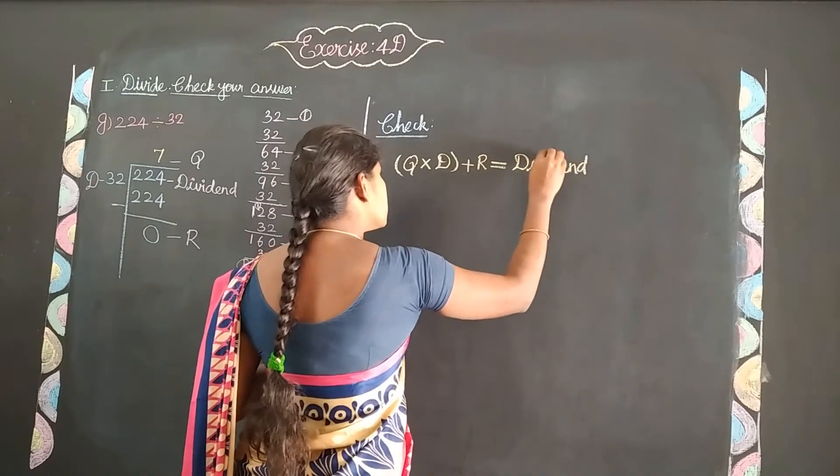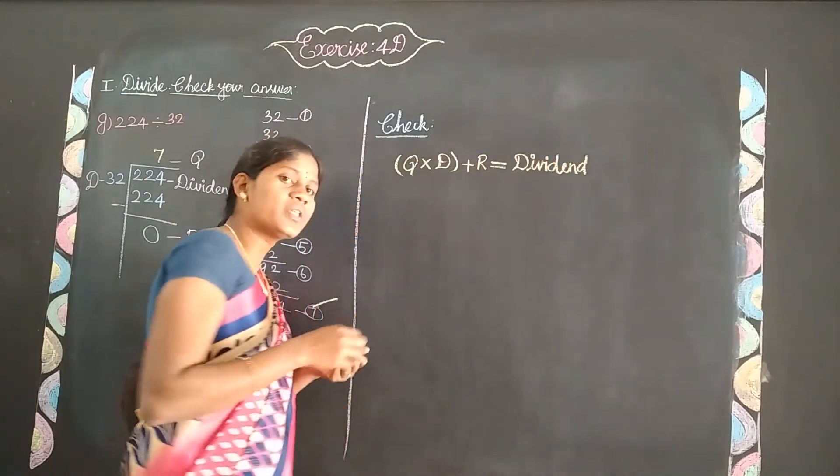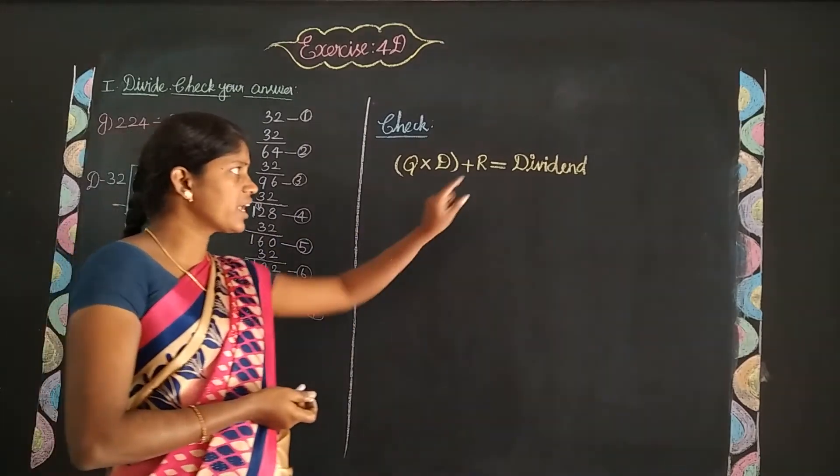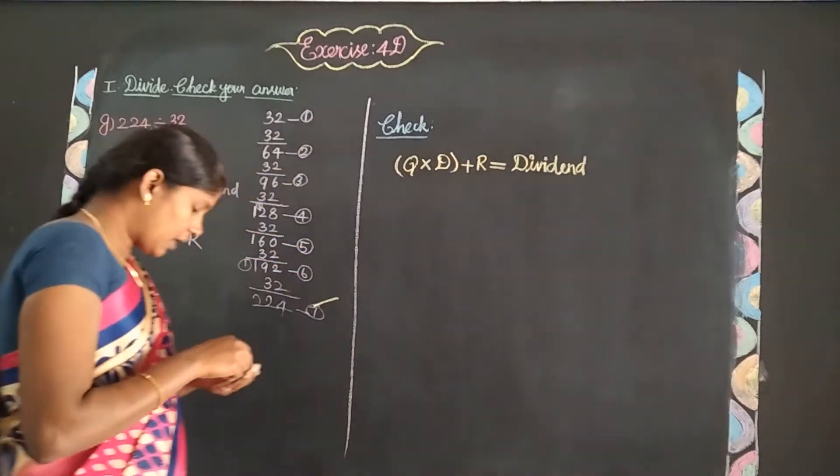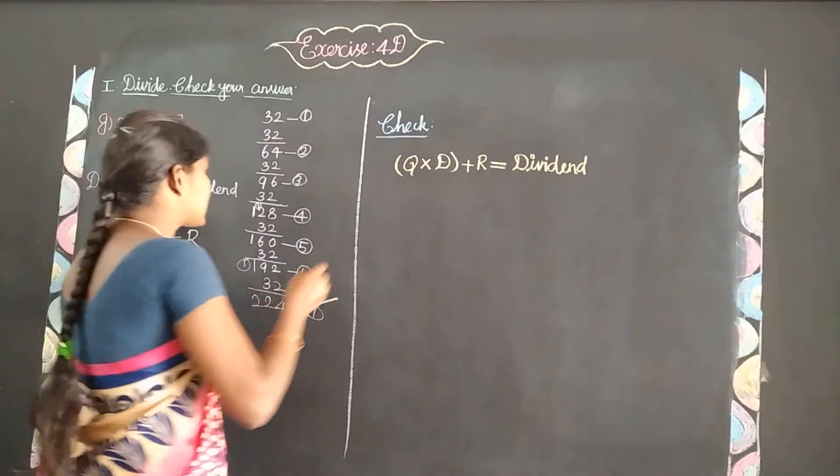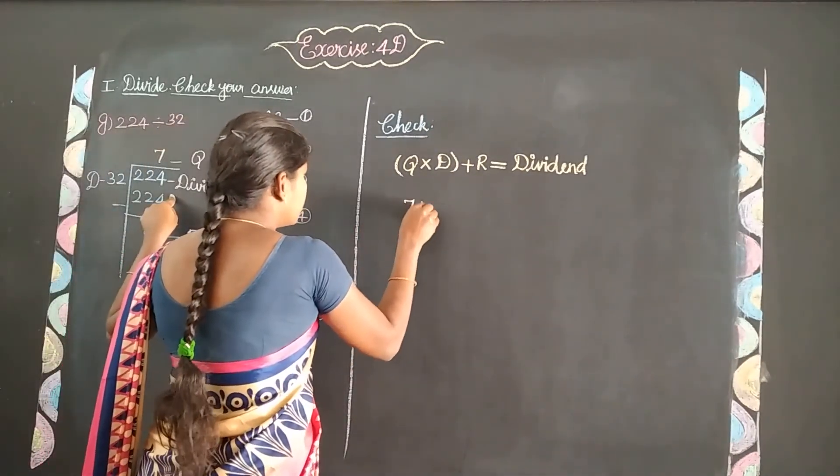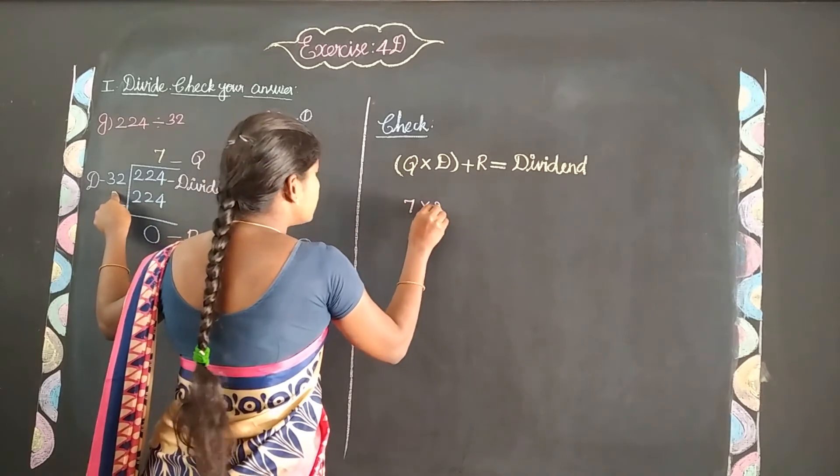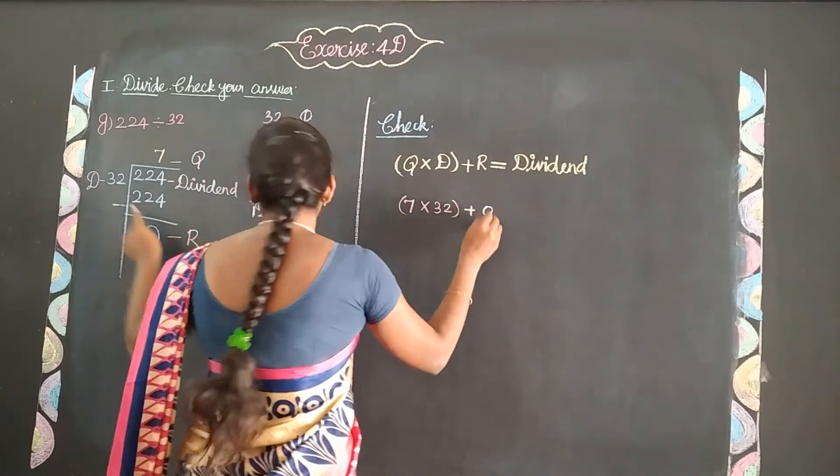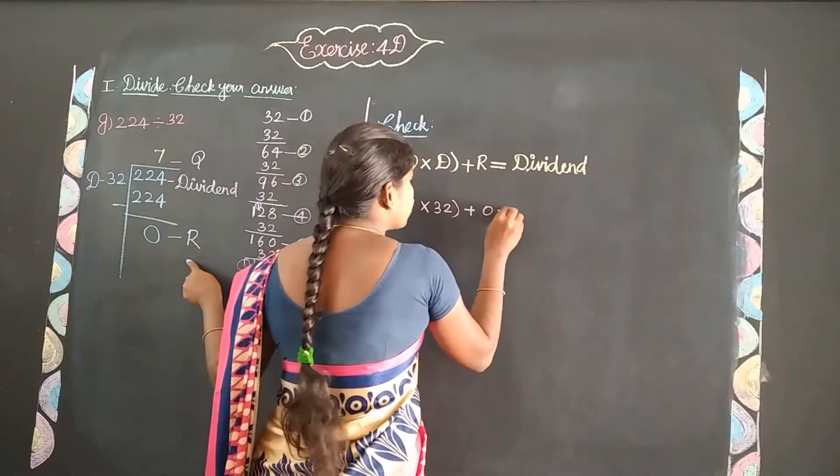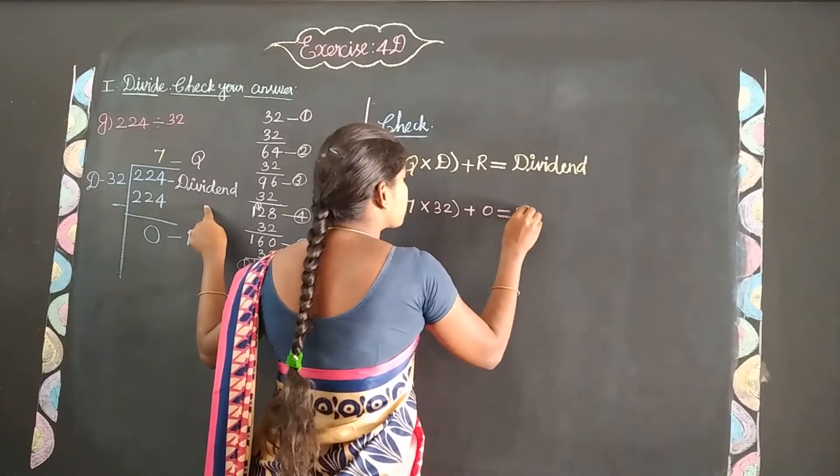Because the remainder is 0, adding 0 gives the same number. So the formula becomes: quotient times divisor equals dividend. Quotient is 7, divisor is 32. So 7 times 32 plus 0 equals 224.